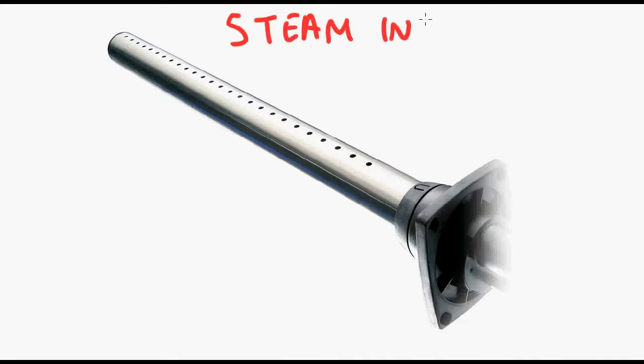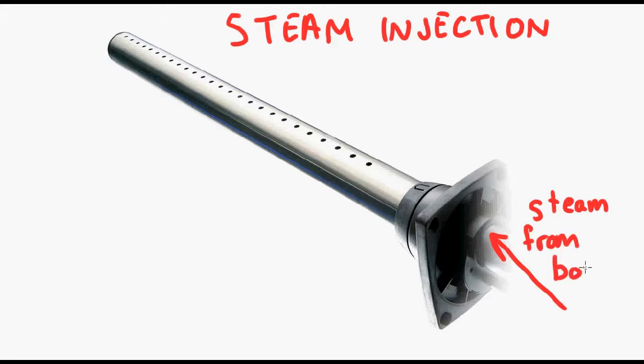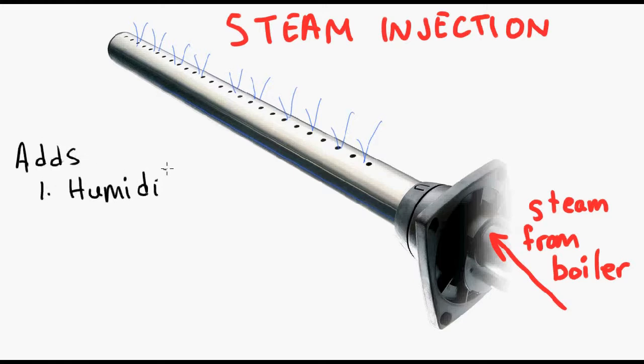Here's a different type of system. This is a steam injection humidifier. This would also be used in a large air handler unit. So steam comes from a boiler that you already have for the heating coils. Goes through the steam injector and gets injected out all these little holes into the air stream. Because it's steam, it adds the humidity, but it also adds heat.